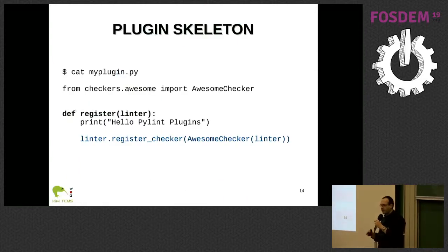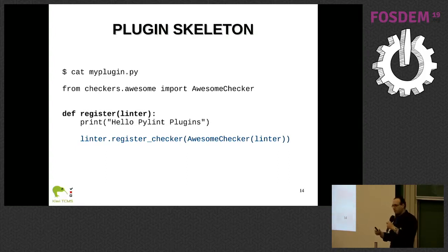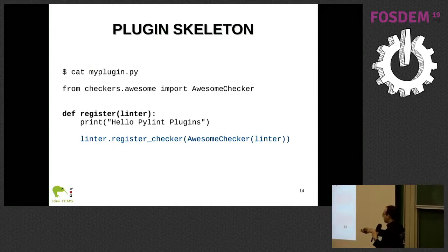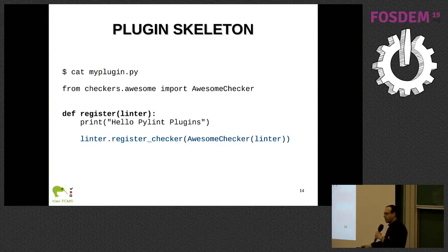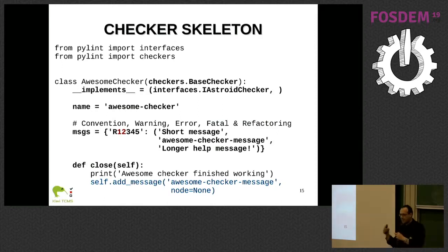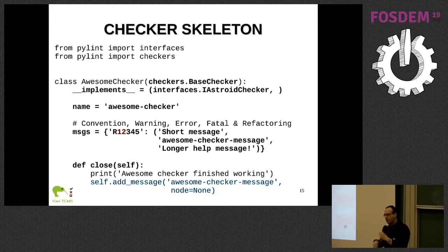Now let's create a PyLint plugin skeleton — this is the hello world of PyLint plugins. Every valid Python module that provides a register function with one argument will be considered a PyLint plugin. PyLint will import the module and try to execute this function. Usually what goes inside is linter.register_checker, and you create an object from what PyLint calls a checker class. This is where all the logic about discovering coding patterns and deciding if something is an error is done.